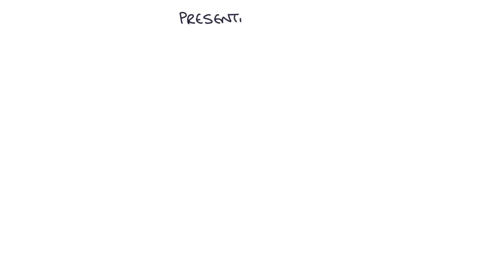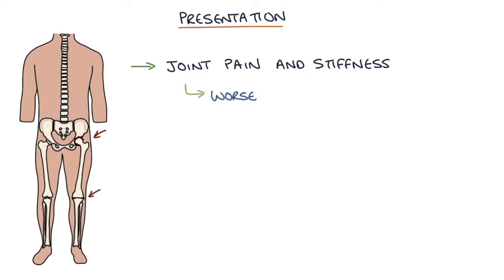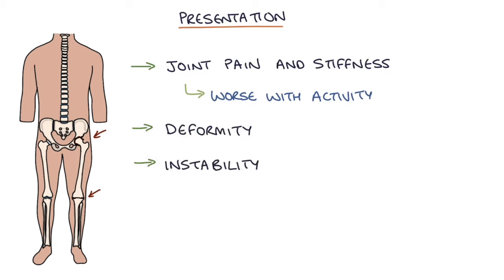So how does it present? Osteoarthritis presents with joint pain and stiffness. This pain and stiffness tends to be worsened by activity, in contrast to inflammatory arthritis where activity tends to improve symptoms. It leads to deformity, instability, and reduced function in the joints.